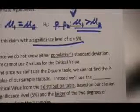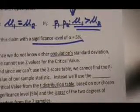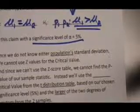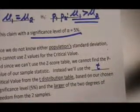Since we can't use a p-value for testing, we instead use the t-critical value from the t-distribution table. Recall that it's based on two things: our chosen significance level, and the larger of the two degrees of freedom. Since we have two samples from two populations, we have two degrees of freedom and we always use the larger of the two.